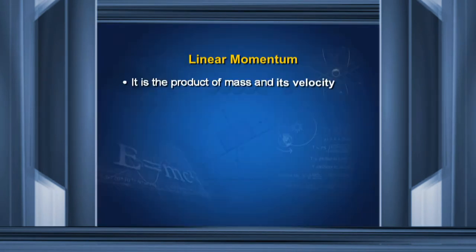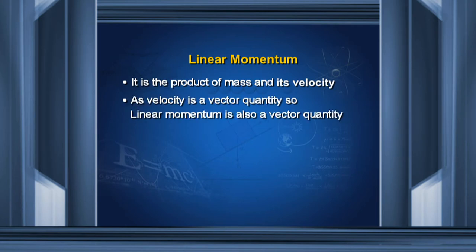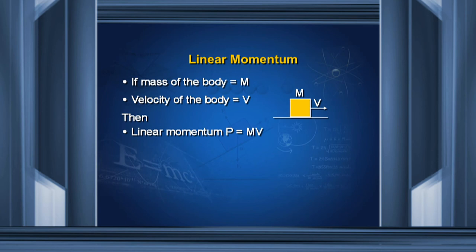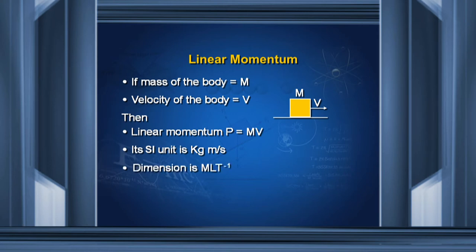Now we will study linear momentum. It is the product of mass and velocity. Since velocity is a vector quantity, linear momentum is also a vector quantity. If we have an object of mass M moving with velocity V, then linear momentum is represented by P, so P = MV. Its SI unit is kilogram meter per second and its dimension is M L T⁻¹.